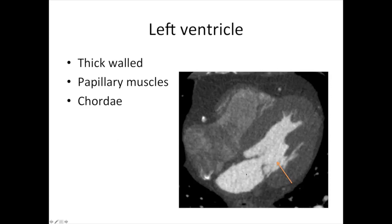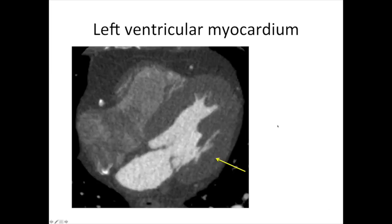From the left atrium, the blood flows into the left ventricle. The left ventricle is a thick-walled, very muscular pumping chamber. It's got papillary muscles here, which are attached to a little corridor and connect to the valve leaflets — we'll come back to the valves later. The combination of the thick wall and the papillary muscles help you identify this as the left ventricle, whereas the thin-walled structure with a moderator band is the right ventricle. This thick-walled muscle of the left ventricle is called the left ventricular myocardium.